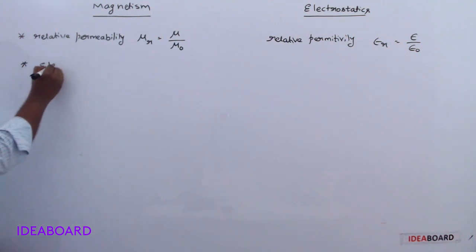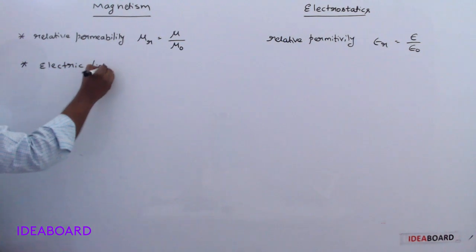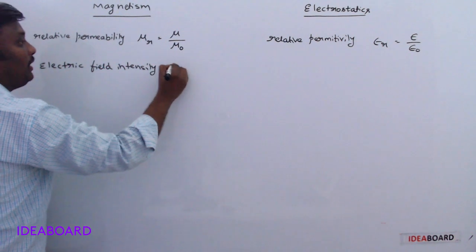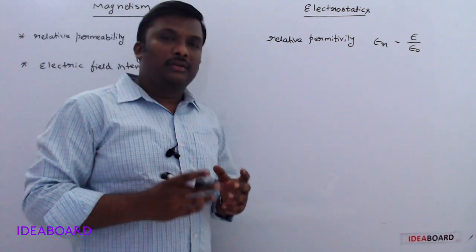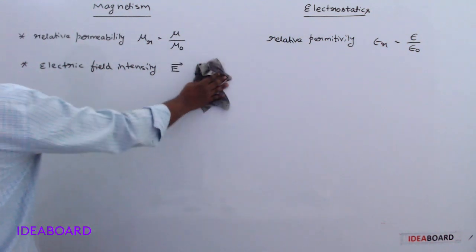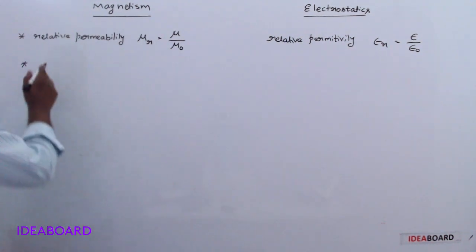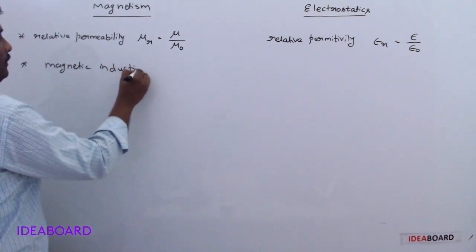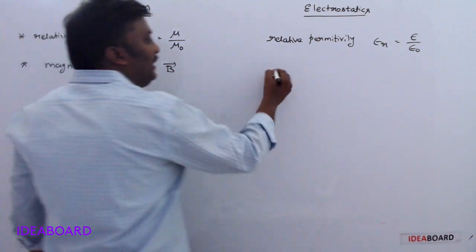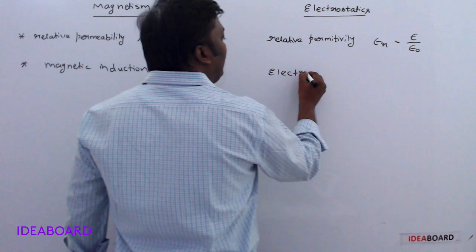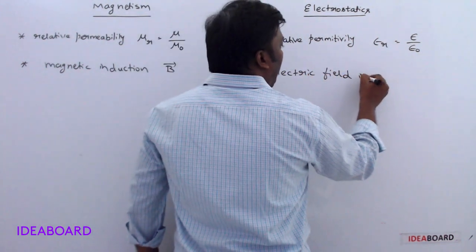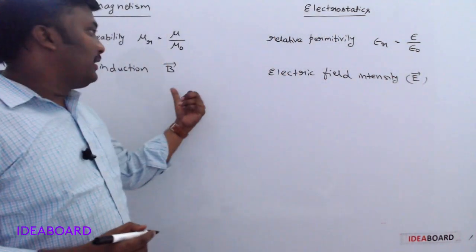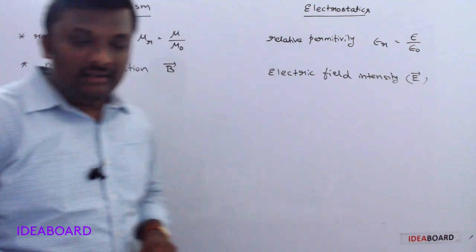Magnetic induction B-bar is analogous to electric field intensity E-bar. So wherever B-bar appears in magnetism, E-bar comes in the corresponding electrostatics formula.